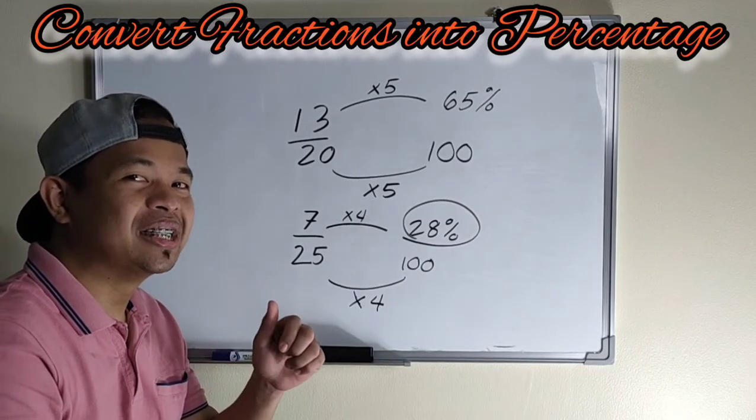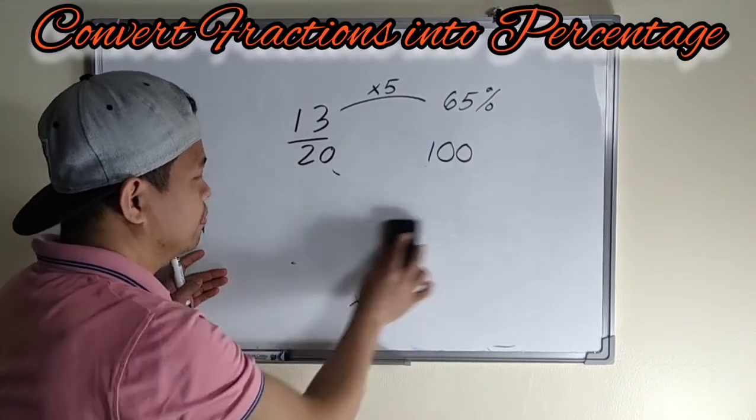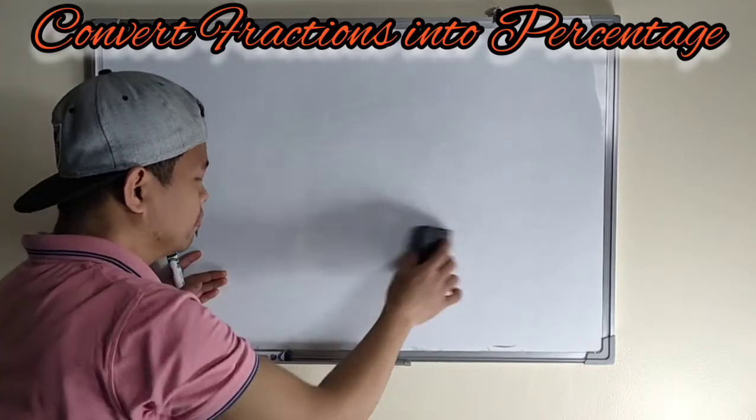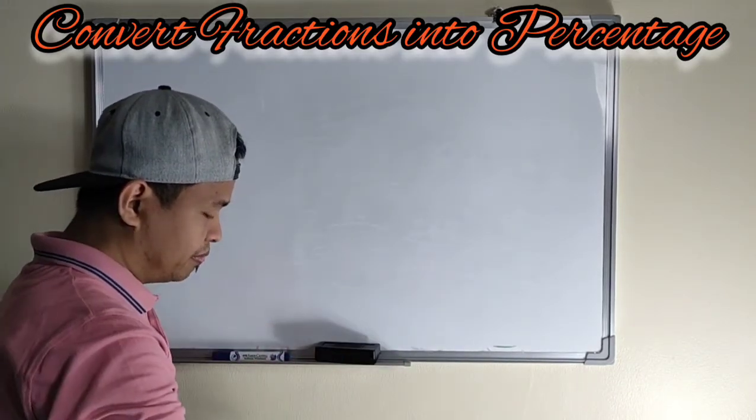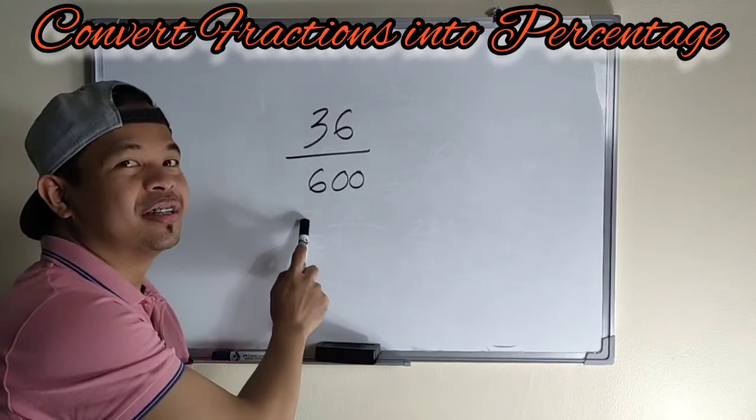Nakupo ba? So one more example. So 36 over 600.